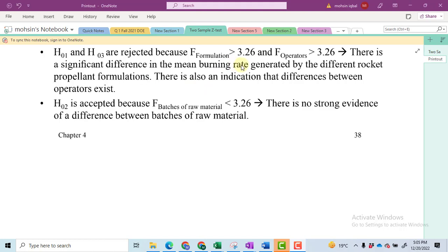In short, we have five different formulations for the rocket and we found a significant difference among them on the burning rate. Further, we also find that we have a significant difference upon the scales of the five operators upon the mean burning rate. Further, the third hypothesis H2 is failed to reject. So we found that there is no significant difference between the batches of raw materials on the mean burning rate.